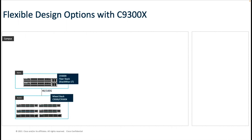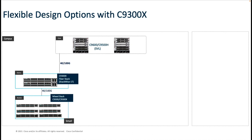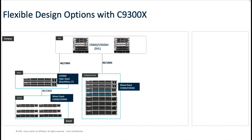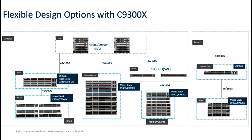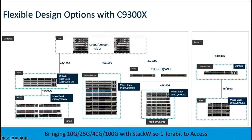All these enhancements have opened up new flexible design options with the Catalyst 9300X. For a smaller campus segment, you can leverage a 9300 fiber stack in distribution connected to a mix stack of 9300 and 9300X, or a collapsed access design using a mix stack. For a medium to large segment, a mix stack of 9300 and 9300X in access can connect to a pair of 9500s in distribution. On the branch side, the 9300X can serve as a collapsed core connected to a mix stack in the access segment, enabling scaling up to 100G right from the access layer.